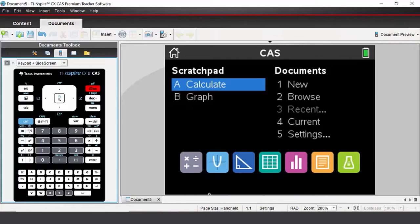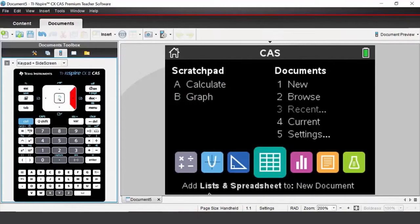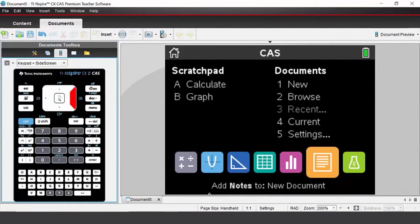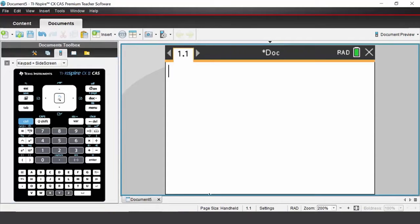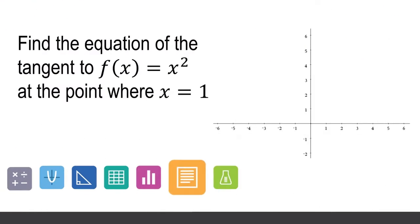On your handheld or computer software, open up a new notes application. What we are going to do is create a file that will find the equation of the tangent to any function at any x value. We're going to start with a parabola at the point where x equals 1.